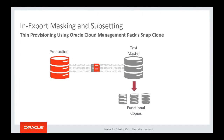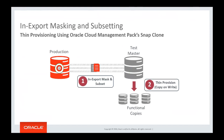You can also use thin provisioning with snap clone databases. Generate an export dump file from production, import it onto your test master, and then generate thin-provisioned copies for all the functional copies you want to use.